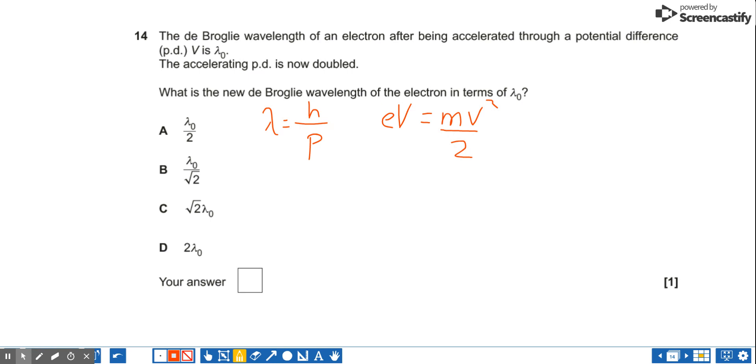Therefore, the velocity V is going to equal 2EV over m square rooted. Therefore, the momentum is the mass times by the velocity.